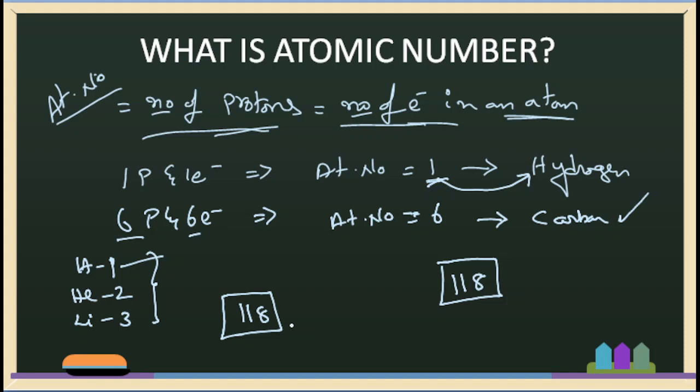We have different elements with different names. For example: atomic number 1 is hydrogen, atomic number 6 is carbon, atomic number 2 is helium, atomic number 3 is lithium, and atomic number 11 is sodium.